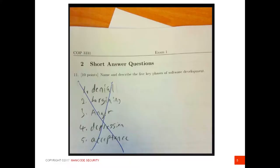Here's what most developers think of a software development life cycle. Name and describe the five key phases of software development: denial, bargaining, anger, depression, and acceptance.